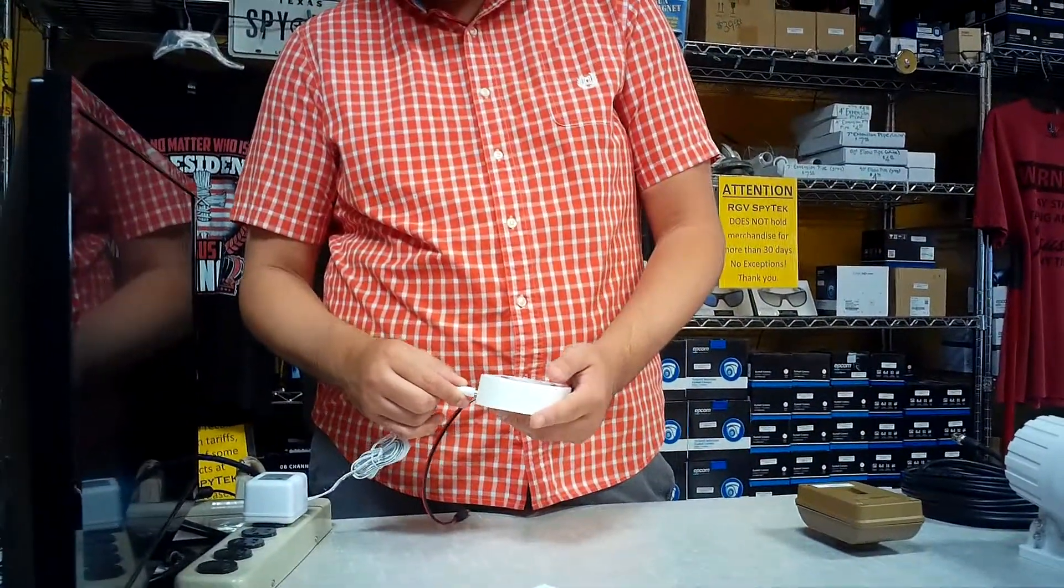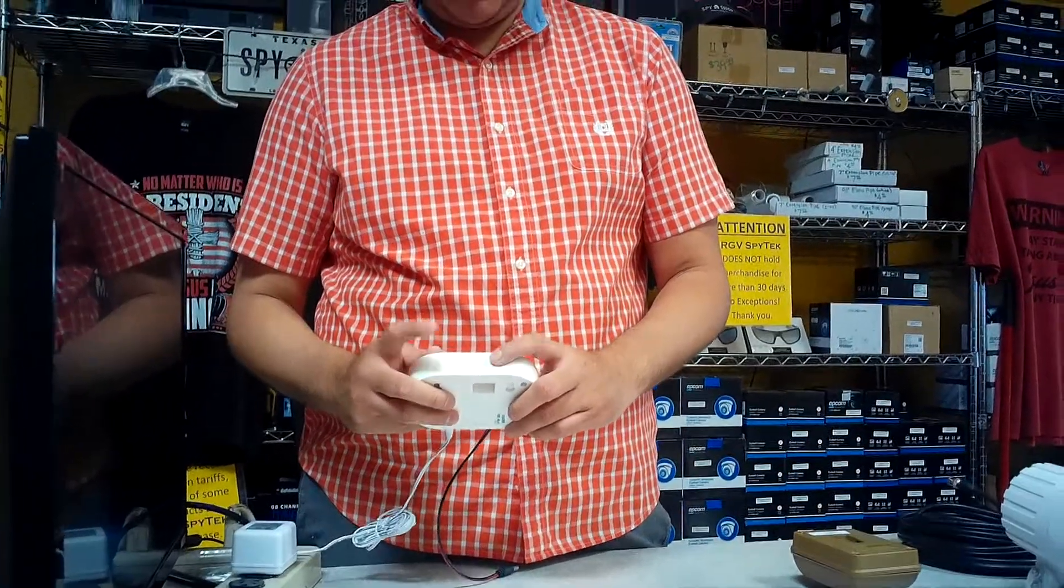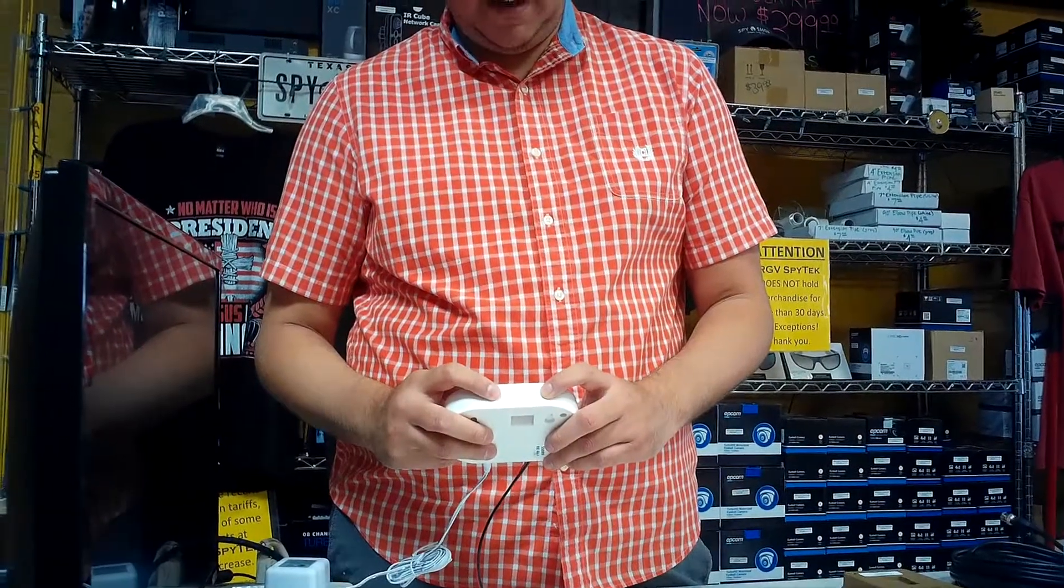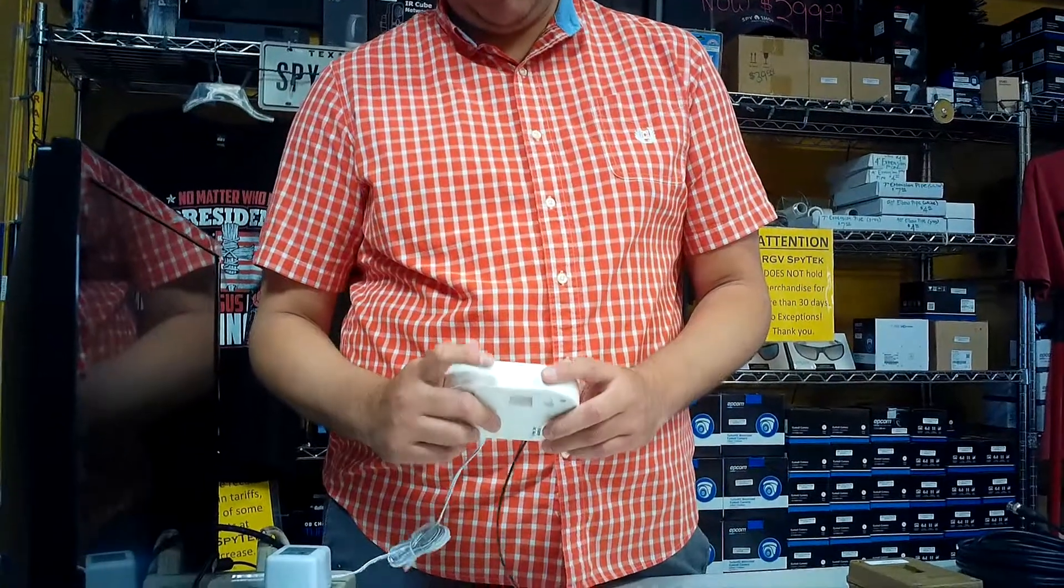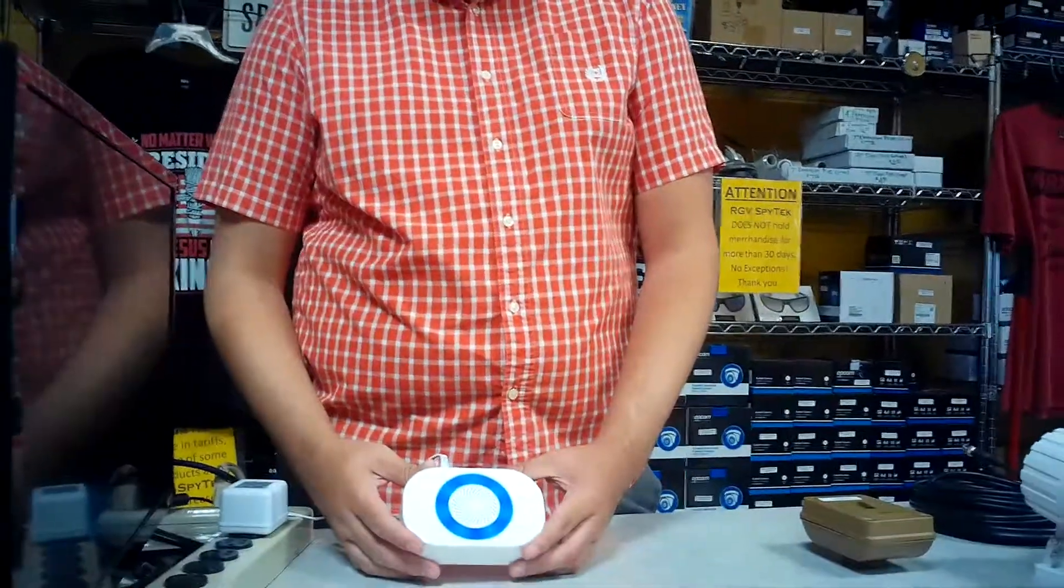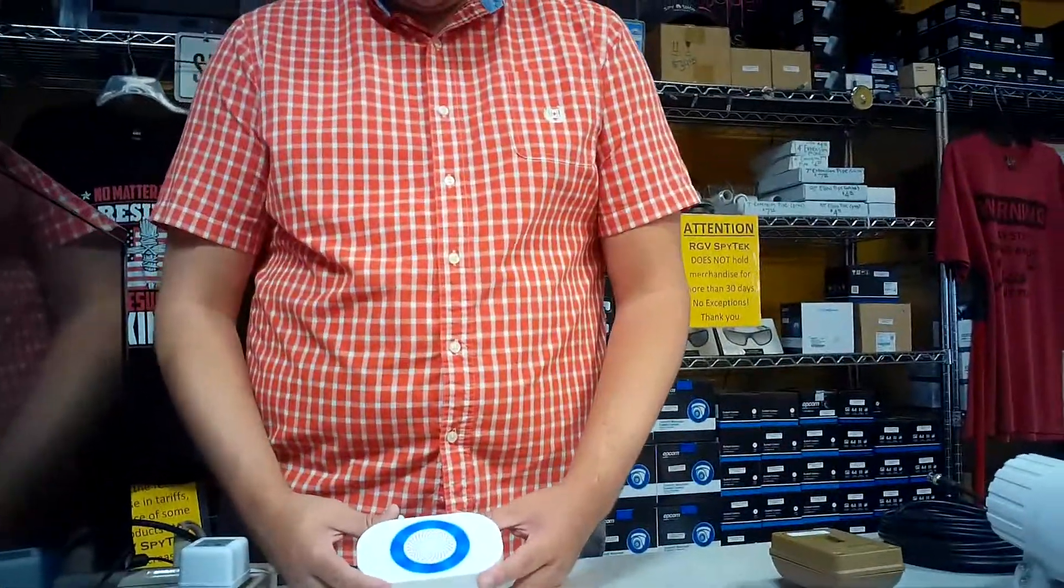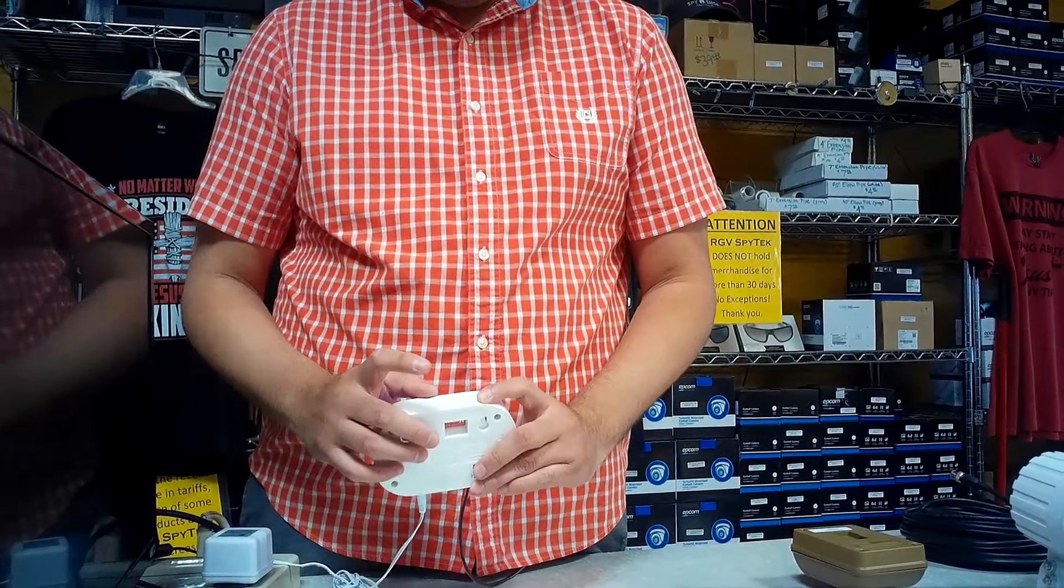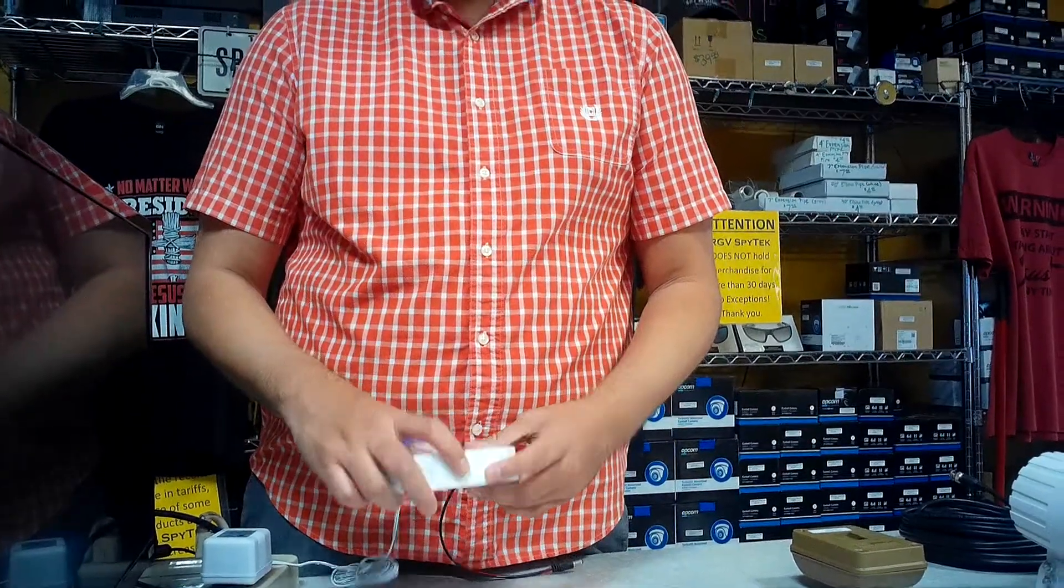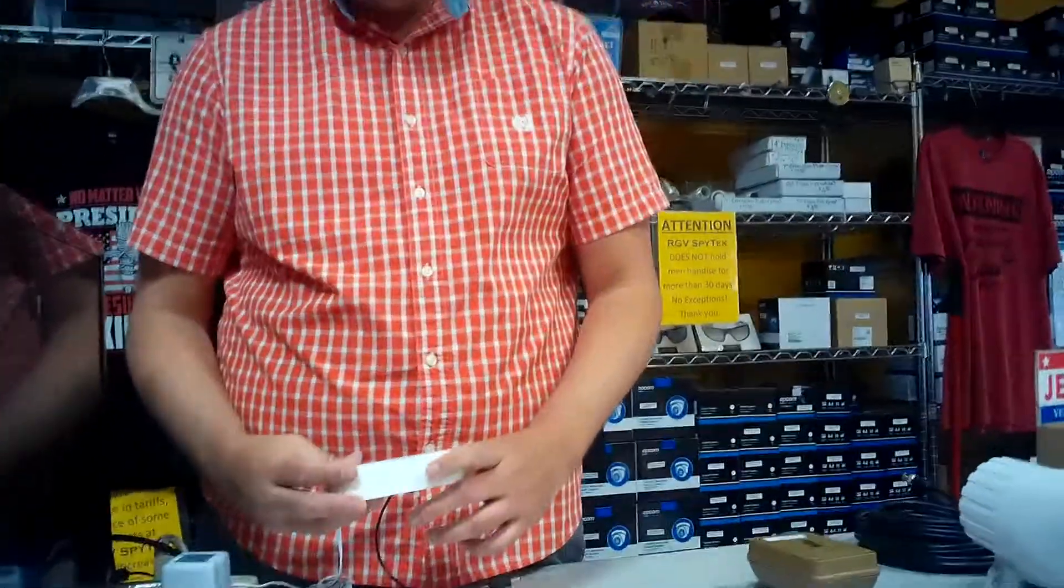Once you have it set up how you want to, now we're just going to plug it into the electricity. And then you have two buttons on the side here. You're going to have your volume or your sound button and your mode button. So we're going to press the sound button in order to turn it on. So then now what we're going to do is tap on the mode button for three seconds until the lights start blinking. So press and hold it for three seconds.